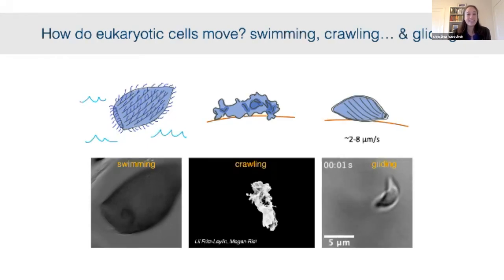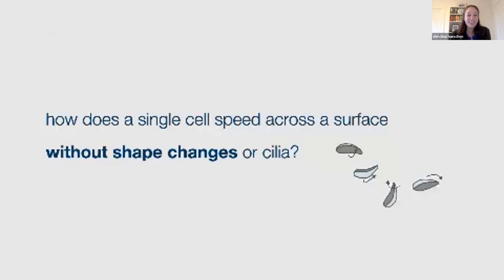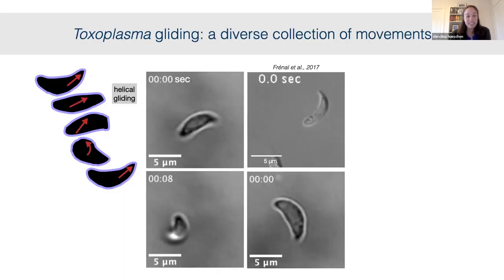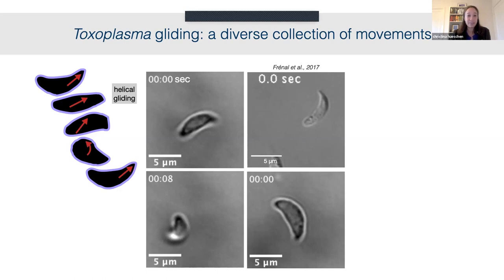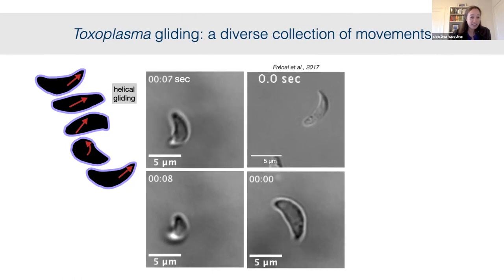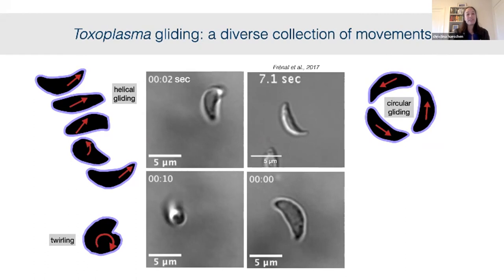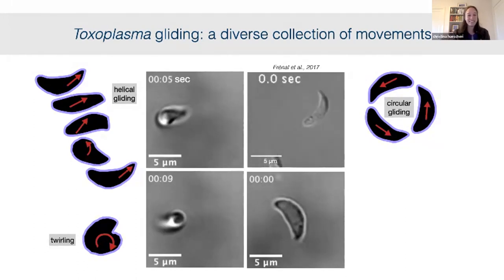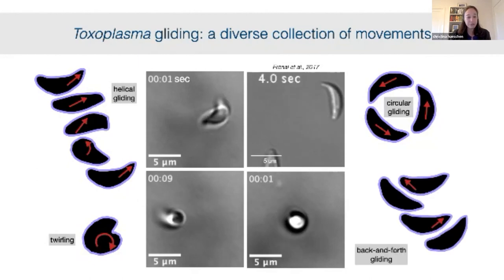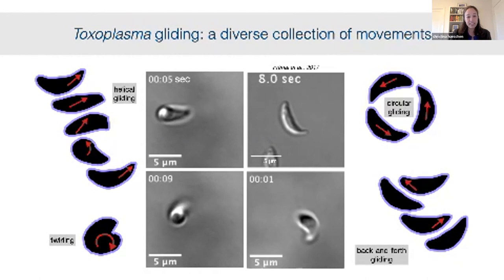I was hooked thinking: how does a single cell speed along across a surface without shape changes or cilia? As I learned more, the mystery deepened, because Toxoplasma gondii actually shows a whole collection of distinct gliding movements: helical gliding where the cell moves forward and rotates; circular gliding; twirling where the cell is stuck on its posterior end and just rotates; and back-and-forth gliding movements where the cell rapidly changes direction.